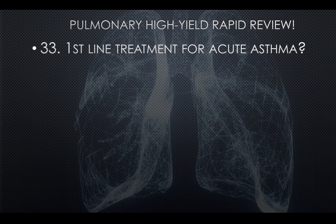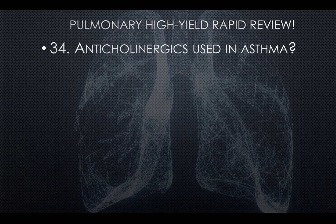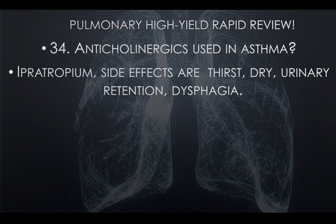Question thirty-three: First-line treatment for acute asthma is SABA — albuterol. For an acute asthma question stem asking for best first-line treatment, the answer is albuterol. Question thirty-four: Anticholinergics used in asthma — that would be ipratropium. Side effects are thirst, dry mouth, urinary retention, and dysphagia. If you see those side effects in a stem, it's likely due to ipratropium.